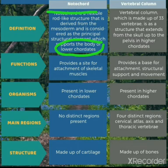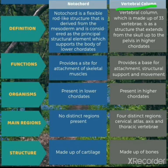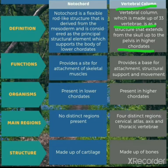The vertebral column is made up of 33 vertebrae and is a structure that extends from the skull up to the pelvis in higher chordates. In the phylum Chordata, the vertebral column is only present in higher chordates, not in all chordate organisms. The notochord gets transformed into the vertebral column in higher chordates.